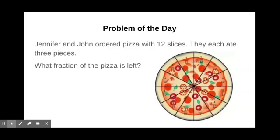Okay, let's check your work and see how you did. We know that Jennifer and John's pizza has 12 slices, just like the picture here. We know that each person ate three pieces. So there's one, two, three pieces for Jennifer, and one, two, three pieces for John.